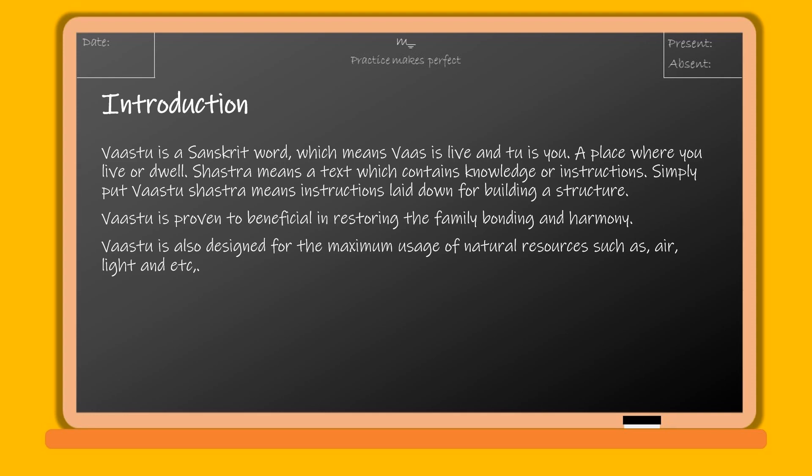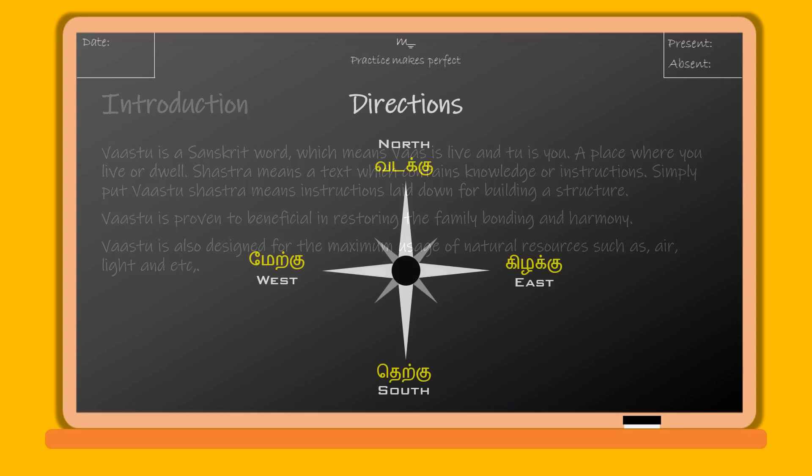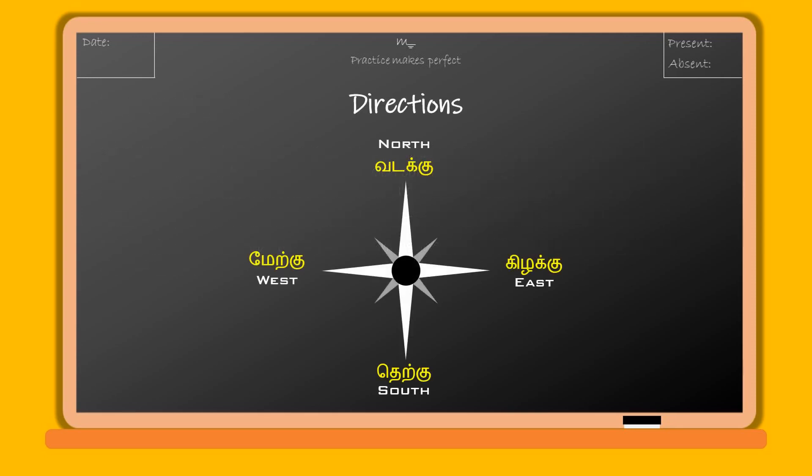Vastu is proven to be beneficial in restoring family bonding and harmony. Vastu is also designed for the maximum usage of natural resources such as air, light, and more. Direction is most important in drawing and Vastu, so always keep that in mind.